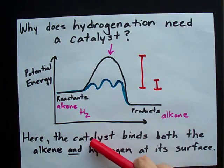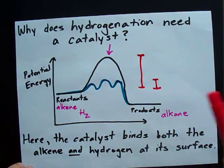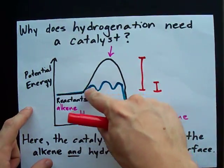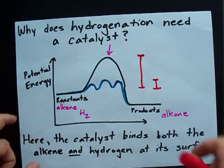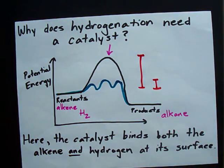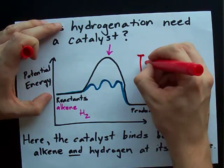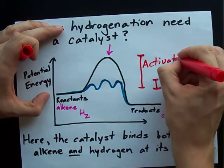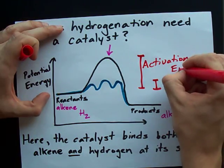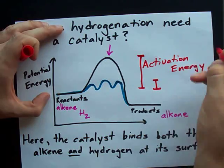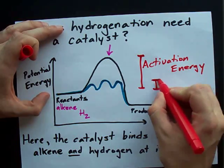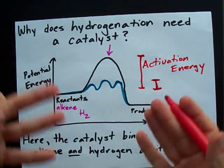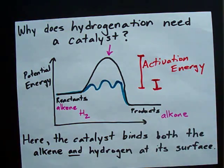The catalyst binds the alkene and hydrogen to its surface and gets the reaction to happen in three smaller steps, so that you reduce the activation energy down from that large number to this tiny little number here. It's less, and that's what counts — that's what makes it a catalyst.